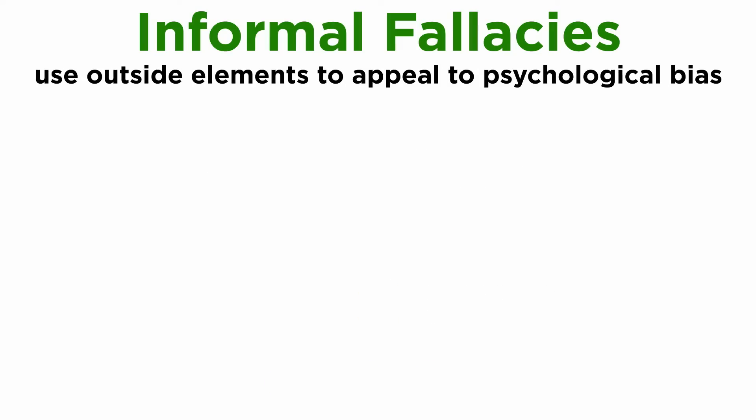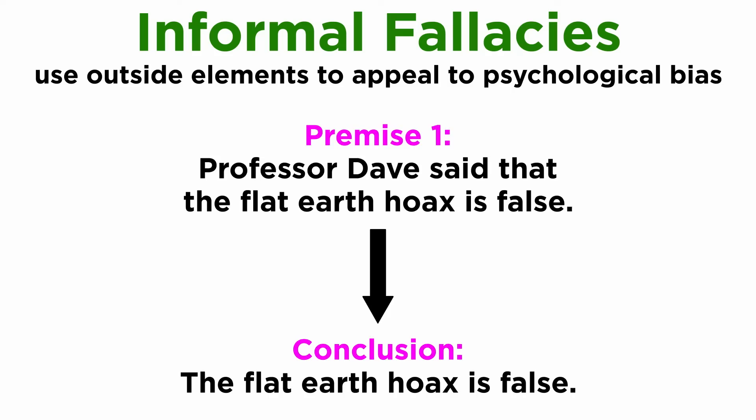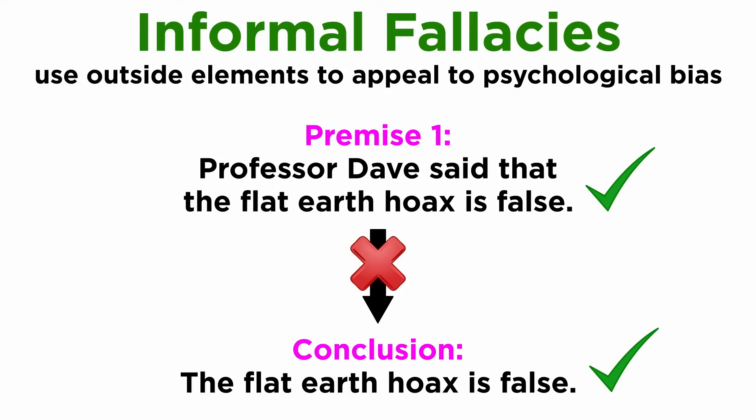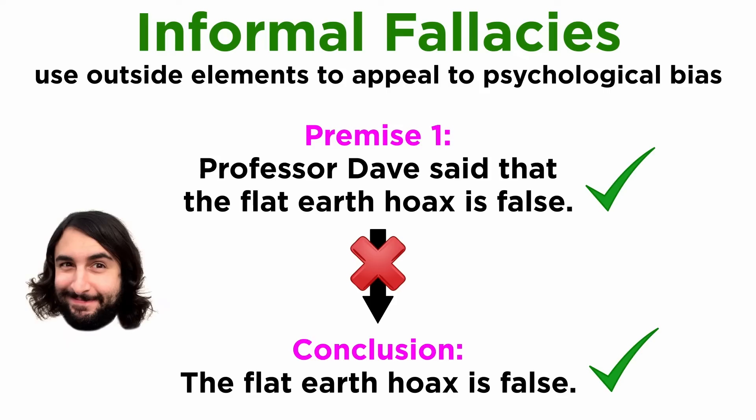Informal fallacies are also partly formal fallacies, but they bring in outside elements to try and make up for their lack in procedural finesse, attempting to appeal to an array of psychological biases. An example would be: Professor Dave said that the flat-earth hoax is false, therefore it is false. Now of course, both of these sentences are true. There are countless reasons why flat-earth is false, as shown in many of my debunks, where I present detailed arguments which can be logically verified. But me simply saying that it is false is not an argument. You'd have to refer to the arguments and facts I provide, since however well-informed my stance may be, my word alone is not an argument.